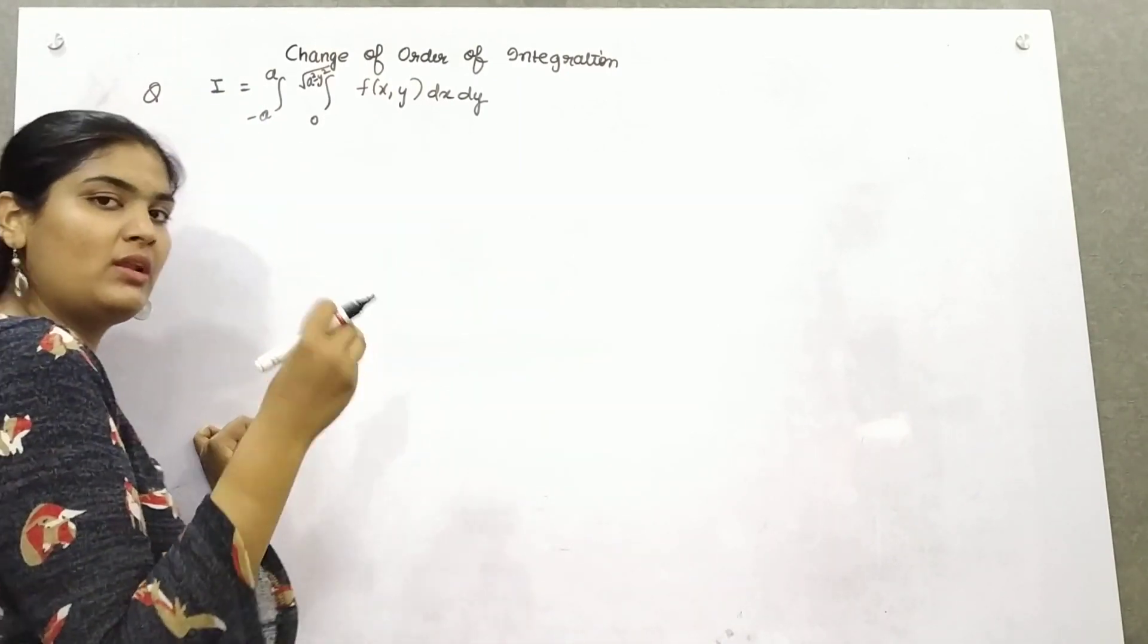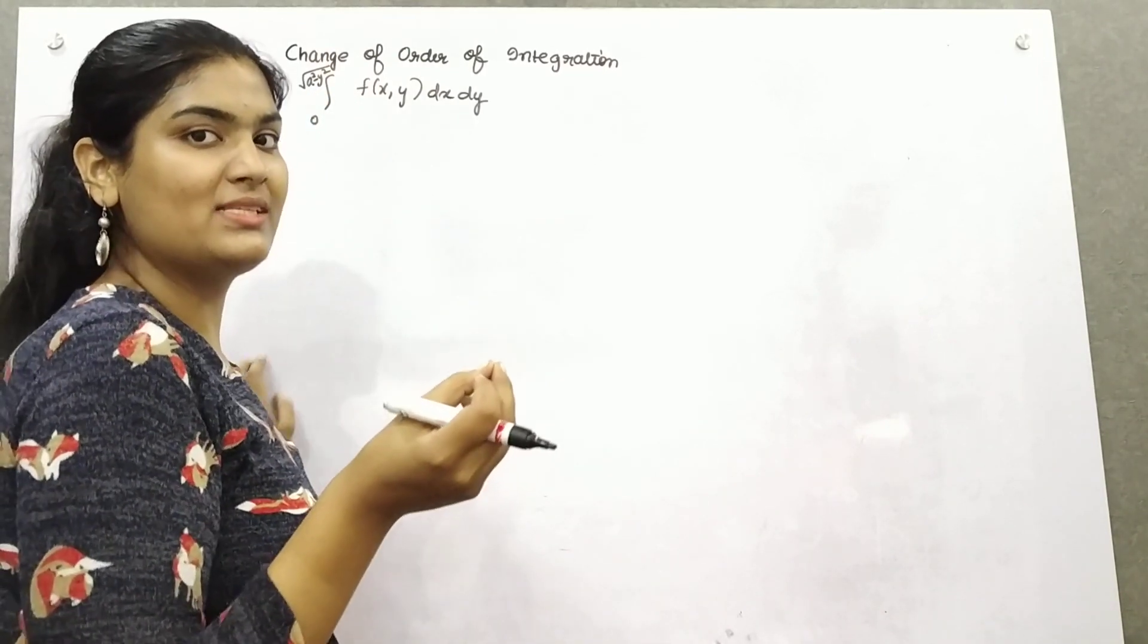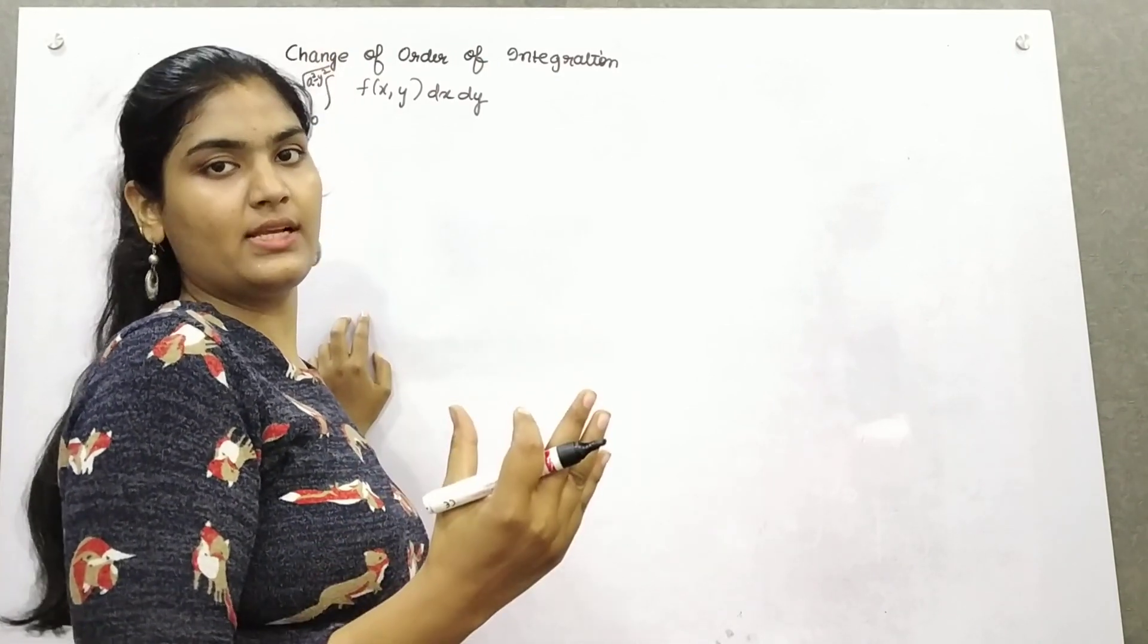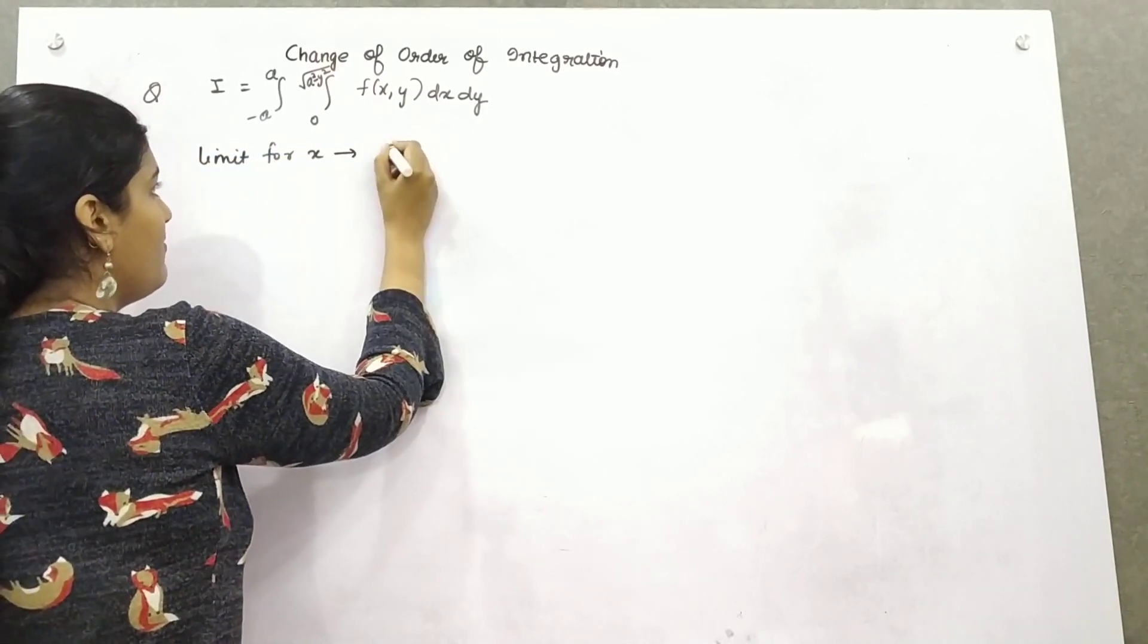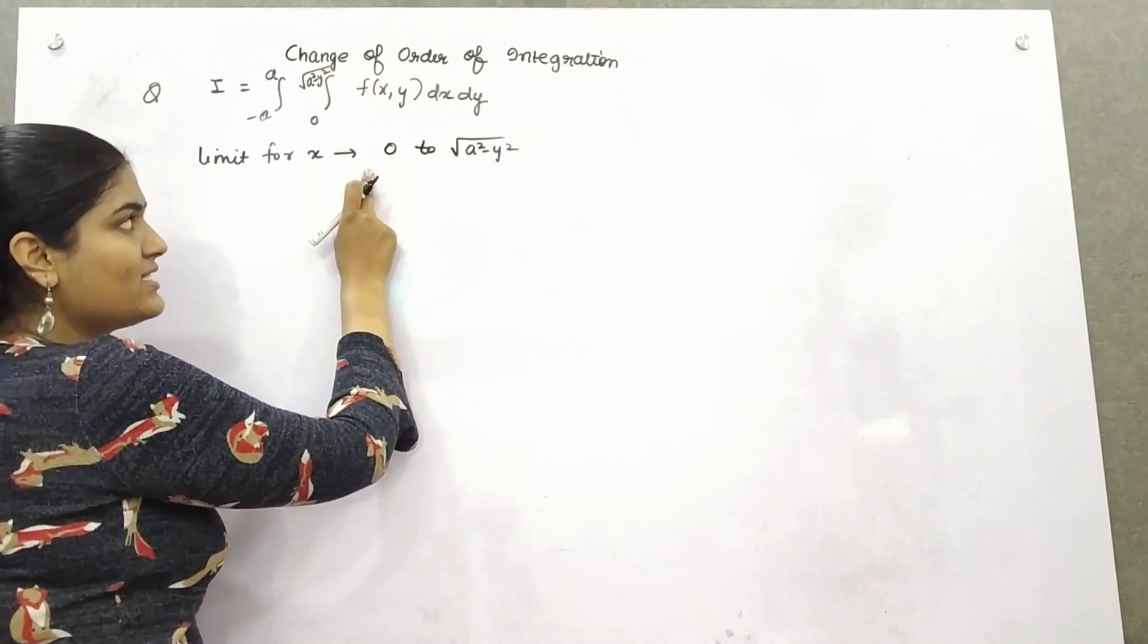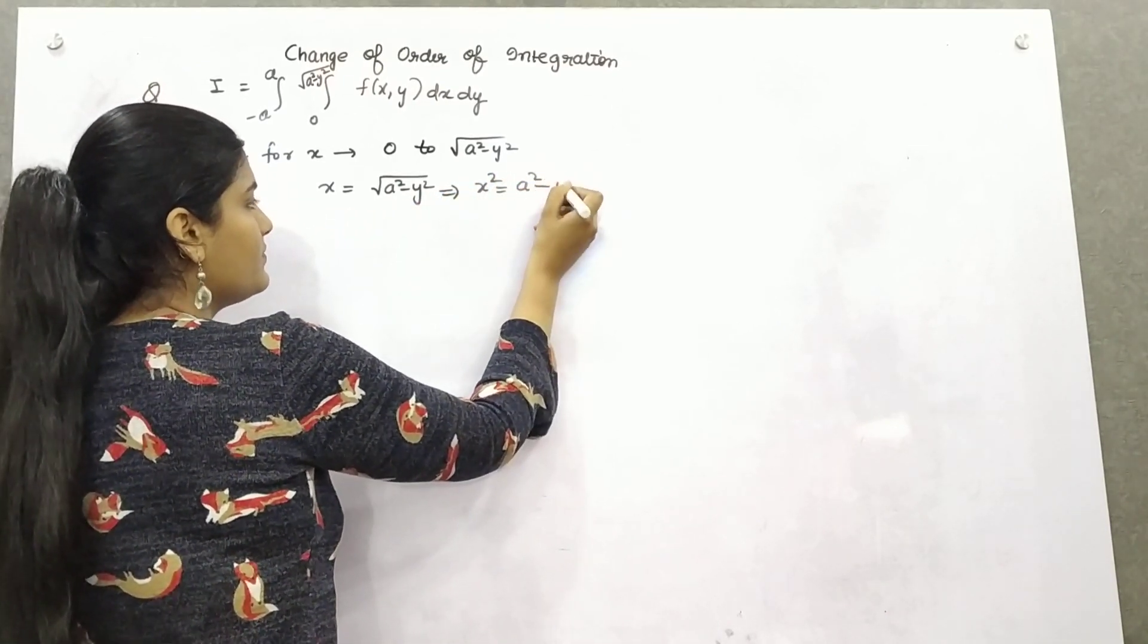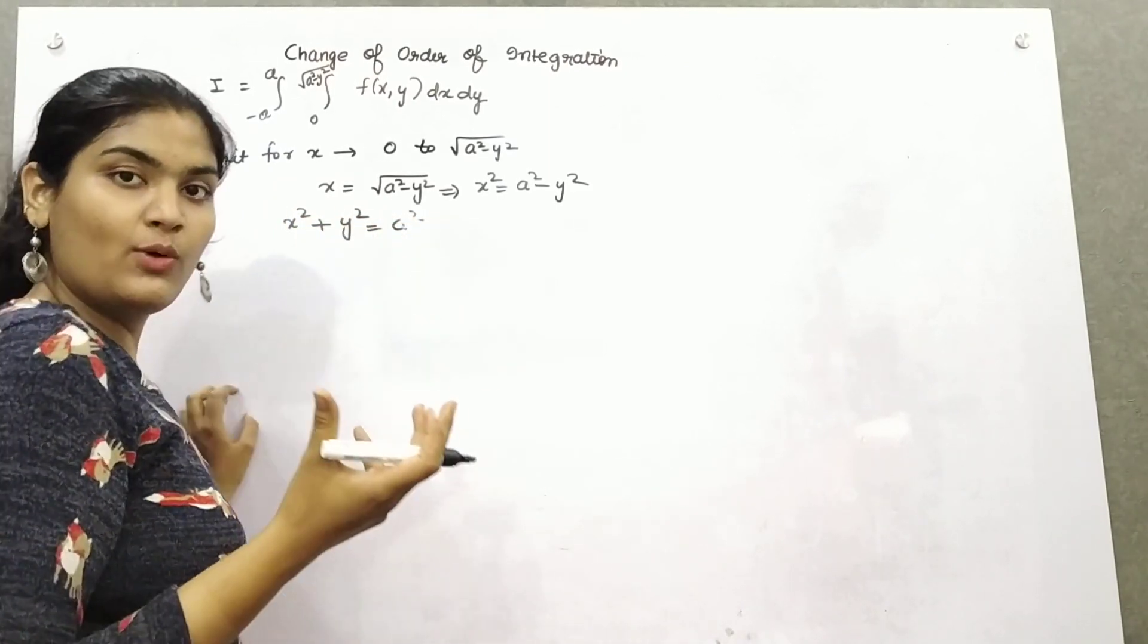First of all, find out which limit is for which variable. You can see here, this is in the form of a square minus y square. That means it has the y variable. So this is the limit for x. And because it is the limit for the x-axis, it will be parallel to the x-axis. Now, x equals 0 to x equals root a square minus y square. If you take squaring both sides, you can see that it is forming an equation of a circle.